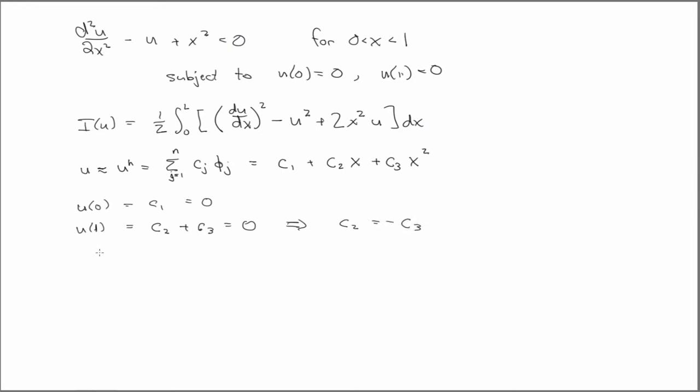All right, so then what's left of our interpolating function is just minus C3X plus C3X squared, or if we factor out C3, X squared minus X. Okay, so this is what we have for interpolating function if we use a polynomial.